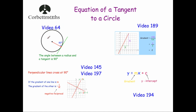The first one is circle theorems — that's video 64 on Corbett Maths if you need to refresh yourself. In particular, the circle theorem that a radius and a tangent meeting at a point meet at 90 degrees — in other words, they're perpendicular to each other. So the red line and the green line are perpendicular.